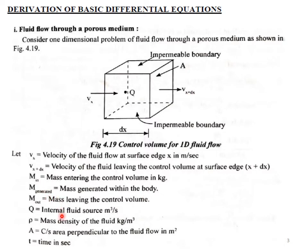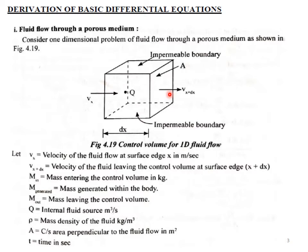V of x plus dx is the velocity of fluid leaving the control volume at the surface edge x plus dx. M_in is the mass entering the control volume in kg. M_generated is the mass generated within the body. M_out is the mass leaving the control volume. Q is the internal fluid source term in cubic meters per second. Rho is the mass density of fluid in kg per cubic meter. A is the cross-sectional area perpendicular to fluid flow in square meters. T is the time in seconds.